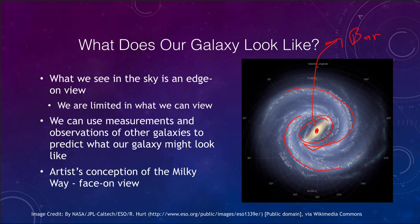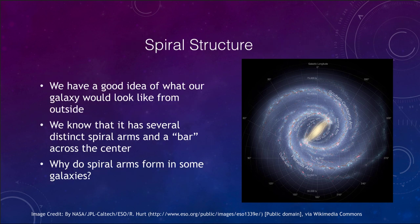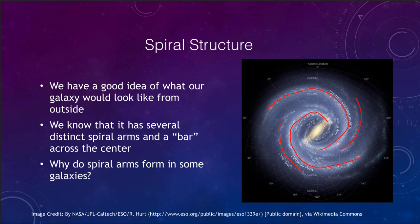Looking at the spiral structure, we now know our galaxy has very distinct spiral structure. There are various arms — the Sagittarius arm, the Perseus arm, and the Scutum-Centaurus arm are the main ones, but there are also others. So our galaxy doesn't have just one or two spiral arms but has a number of them. We know it has several distinct arms and the bar going through its center, which we've also seen in other galaxies. A question is: why do we get spiral arms in some galaxies but not all of them?